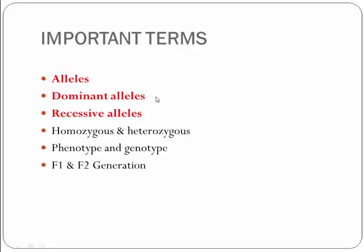In the current video lecture, I will explain the rest of the terms. They are homozygous and heterozygous, phenotype and genotype, and the F1 and F2 generation. I have also given a brief introduction about genetics and explained the 7 characteristics of garden pea studied by Mendel. In this current video lecture, all these important terms will be explained. Hope you will enjoy this video lecture and understand the concept properly. So, let's begin.